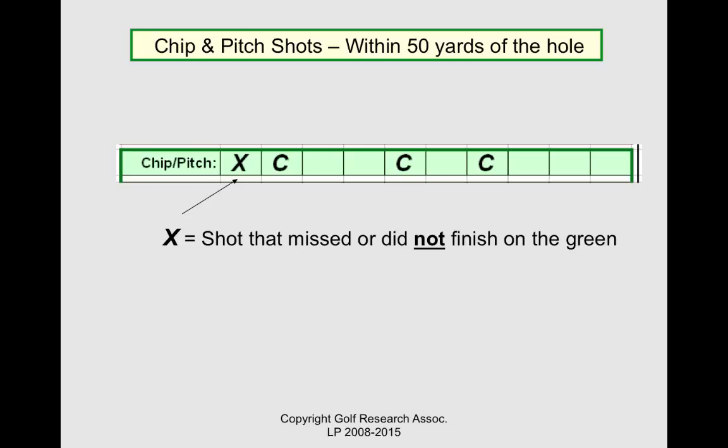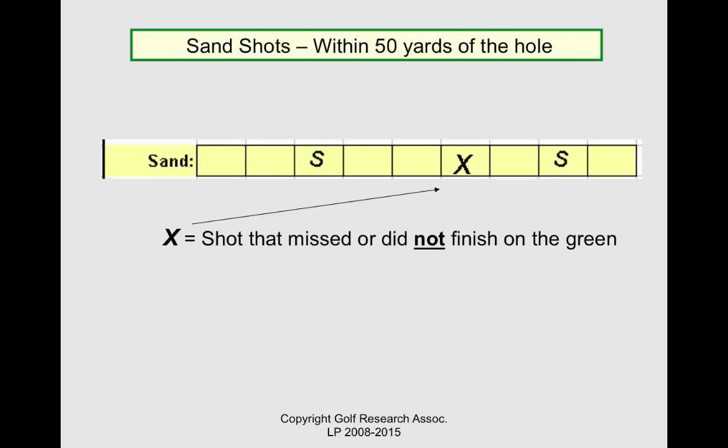The short game: chipping and pitching — shots within 50 yards of the hole. Record when you have one and whether or not it was successful — in other words, whether it finished on the green. We will know just how successful based upon the distance of the putt that follows. Also record an error: the shot that was chunked short or sculled over the green. Again, misses on the fringe should not be considered errors when the next shot is really a putting opportunity — the distance of the putt is what will be important. Sand is exactly the same as chipping and pitching; it's sand shots from within 50 yards of the hole.